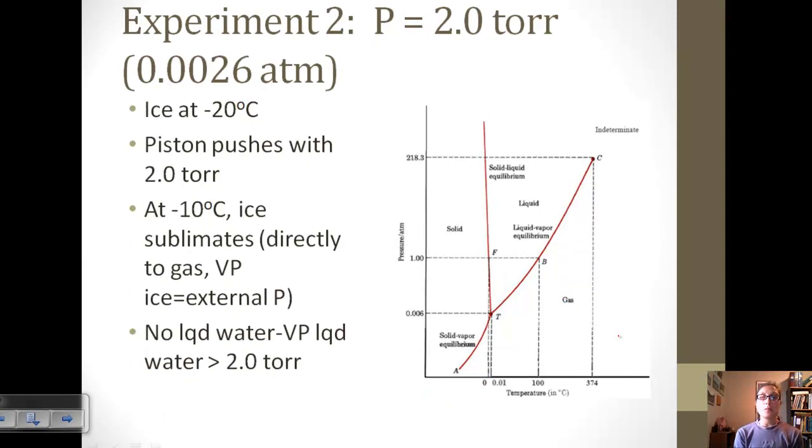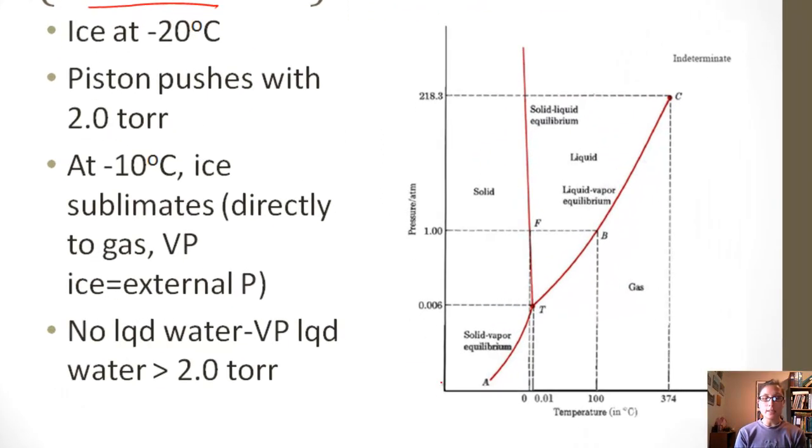Let's look at a second experiment where we have a much lower pressure. Instead of one atmosphere, we have 0.0026 atmospheres. We're still going to start with ice at negative 20 Celsius, but now our piston is pushing down with 2 torr or 0.0026 atmospheres.